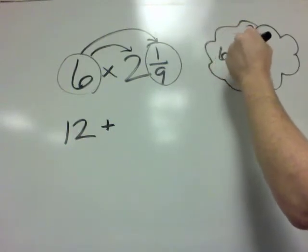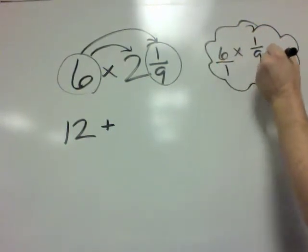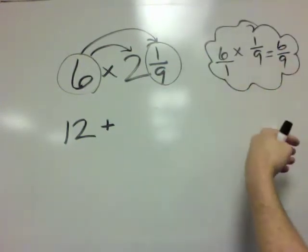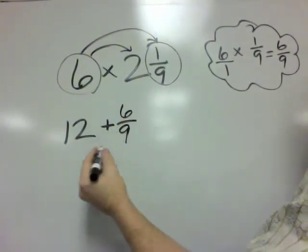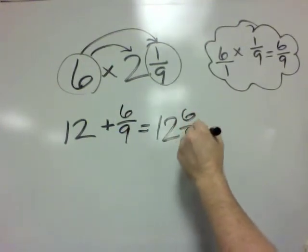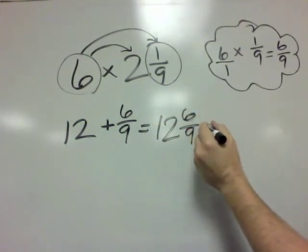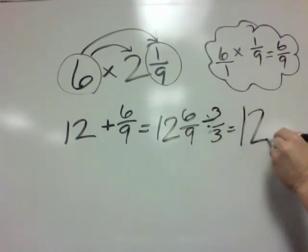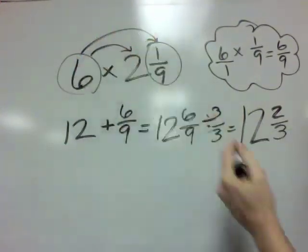we can do 6 times 1 ninth, which is 6 over 1 times 1 ninth, which equals 6 ninths. We could just multiply straight across. Let's not even worry about reducing. And we get 6 ninths. So this becomes 12 and 6 ninths. And of course, 6 ninths reduces to 2 thirds, because you could just divide by 3 over 3. And we get 12 and 2 thirds. So there's another way to do this kind of a problem, using the distributive property.